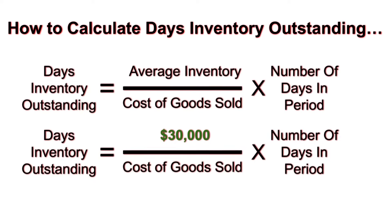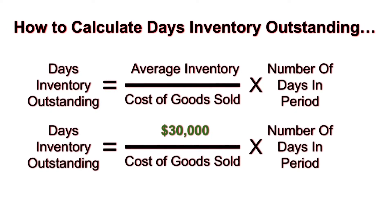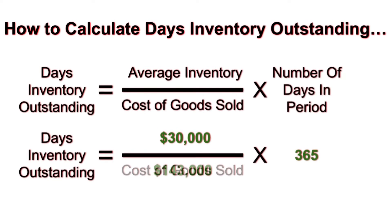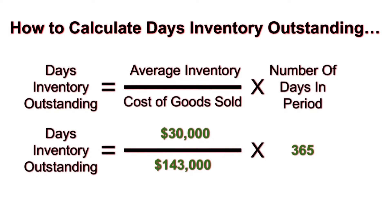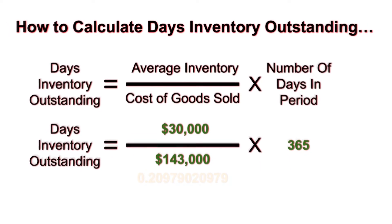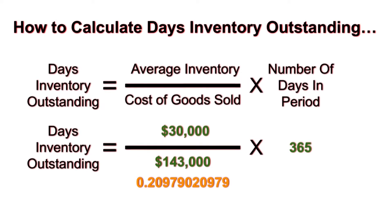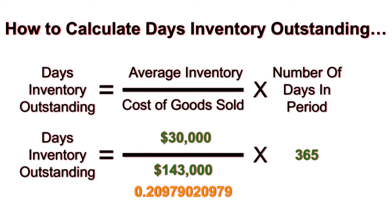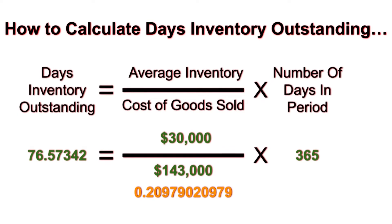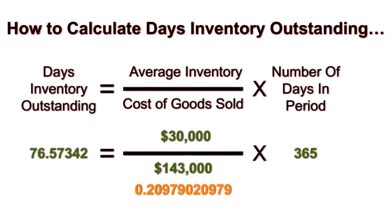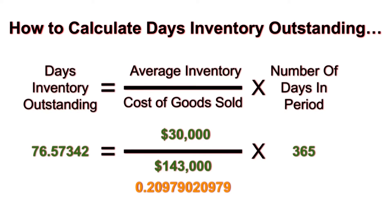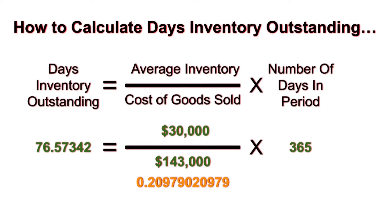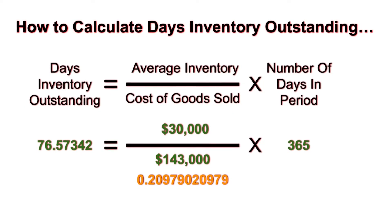For example, if a company has $30,000 in inventory on average during a one-year period and their cost of goods sold is $143,000, we would calculate D.I.O. by first dividing the average inventory of $30,000 by the cost of goods sold of $143,000, and then multiplying that by the number of days in the period. For a one-year period, we would multiply by 365 days, which would equal a D.I.O. of 76.57 days.